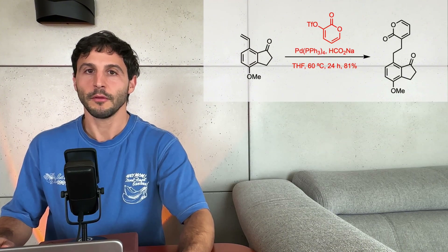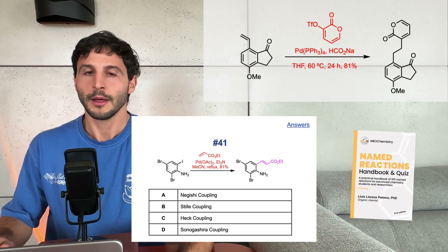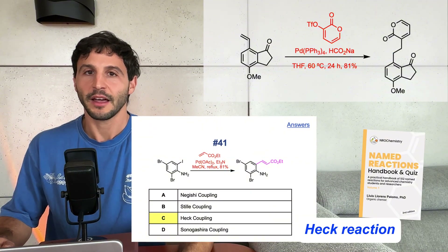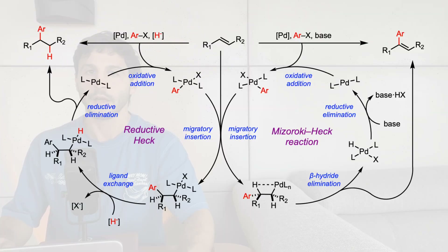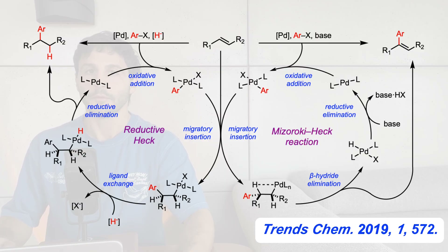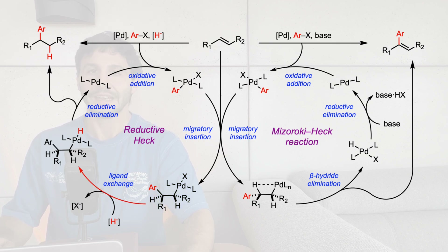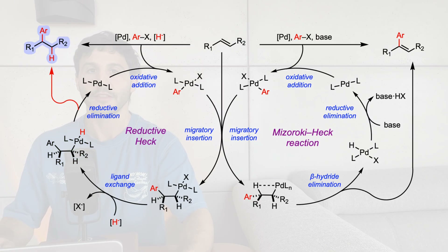The next step involves another name reaction. In this transformation, a pyrone triflate reacts with the alkyne to form the coupled product. This is a reductive Heck reaction. The general mechanism of the Heck or Mizoroki-Heck reaction involves oxidative addition, migratory insertion of the alkyne, and beta-hydride elimination to deliver functionalized alkyne products. In contrast, in a reductive Heck reaction, the alkyl-palladium intermediate undergoes ligand exchange with a hydride source, most commonly sodium formate, generating a palladium hydride complex that undergoes reductive cleavage to form a new carbon-hydrogen bond.